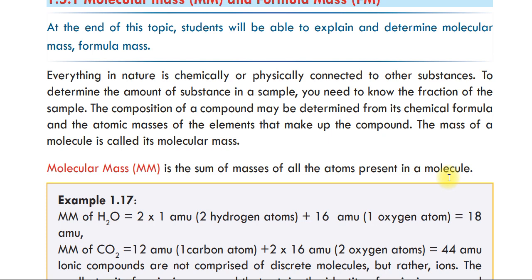We can calculate the mass of S8. Phosphorus P4 is a phosphorus molecule; sulfur is a sulfur molecule. Nitrogen is a nitrogen molecule. Hydrogen and oxygen are diatomic molecules. The molecular mass is the sum of the mass of all the atoms present in a molecule.